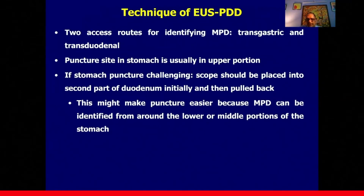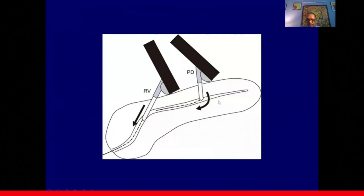There are two access routes: transgastric or transduodenal. The puncture site in the stomach is usually in the upper portion, and sometimes identification of the main pancreatic duct from the stomach is challenging. In that case, the scope should be pushed into the second part of the duodenum and then pulled back under EUS guidance — this withdrawal maneuver can identify the duct in the middle or lower portions of the stomach. If planning a rendezvous, the puncture should be from the neck for a straight drainage route; for antegrade duct drainage, puncture should be from the distal body with the guide wire pushed toward the papilla.